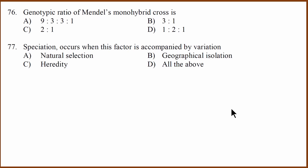Genotypic ratio. Genotypic ratio is not characteristic ratio. It is the genes ratio. So Mendel's monohybrid cross, you will have one tall plant, one TT plant, two mixed gene plant and one short plant. The ratio is 1:2:1. What about the 77th question? Speciation occurs when this factor is accompanied by variation. So you need to have natural selection, you need to have geographical isolation and you need to have heredity. So you need to have all of them.